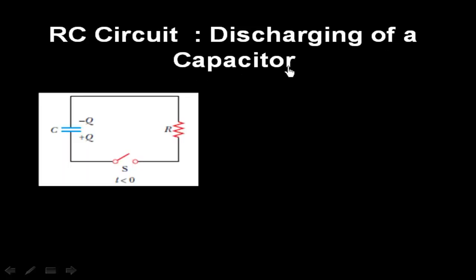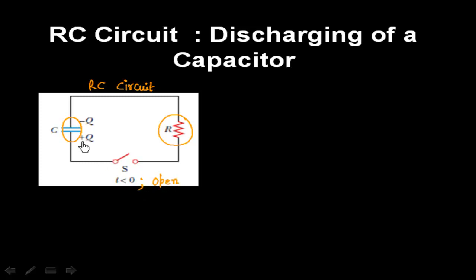RC circuit — discharging of a capacitor. Let us say we have an RC circuit here, and this circuit contains a resistor of resistance R. This also contains a capacitor of capacitance C. Initially this circuit is open, that is there is no current inside this circuit — that is T is less than 0. So the circuit is open when T is less than 0. Let us say the charge on the capacitor is Q₀, so the initial charge on the capacitor is Q₀.